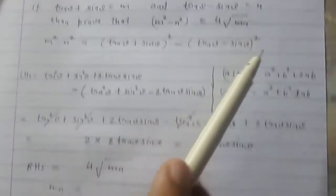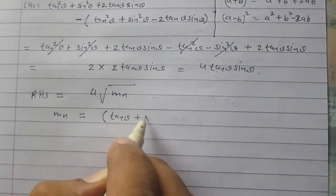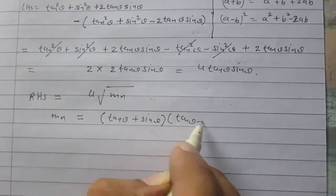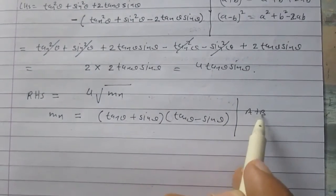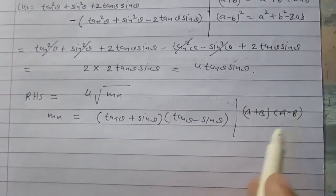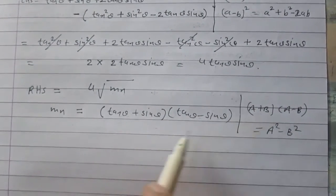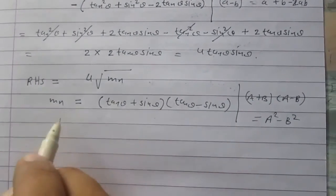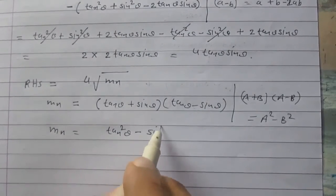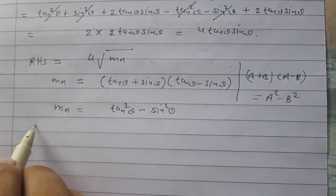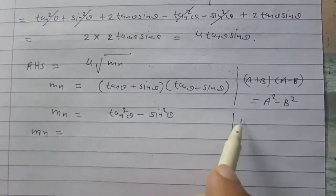After substituting the values, m × n = (tan θ + sin θ)(tan θ - sin θ). We can use the identity (a + b)(a - b) = a² - b², where a = tan θ and b = sin θ. After applying this identity, mn = tan²θ - sin²θ.